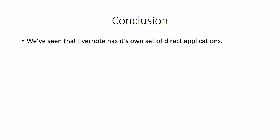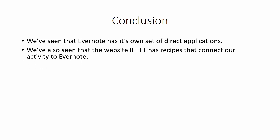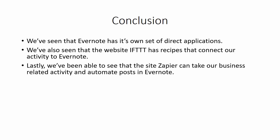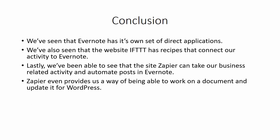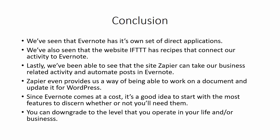We've seen that Evernote has its own set of direct applications. We've also seen that IFTTT has recipes that connect our activity to Evernote, and that Zapier can take our business-related activity and automate posts in Evernote. Zapier even provides a way to work on a document and update it in WordPress. Since Evernote comes at a cost, it's a good idea to start with the most features to discern whether or not you'll actually need them, and then downgrade to the level that fits your life and business.